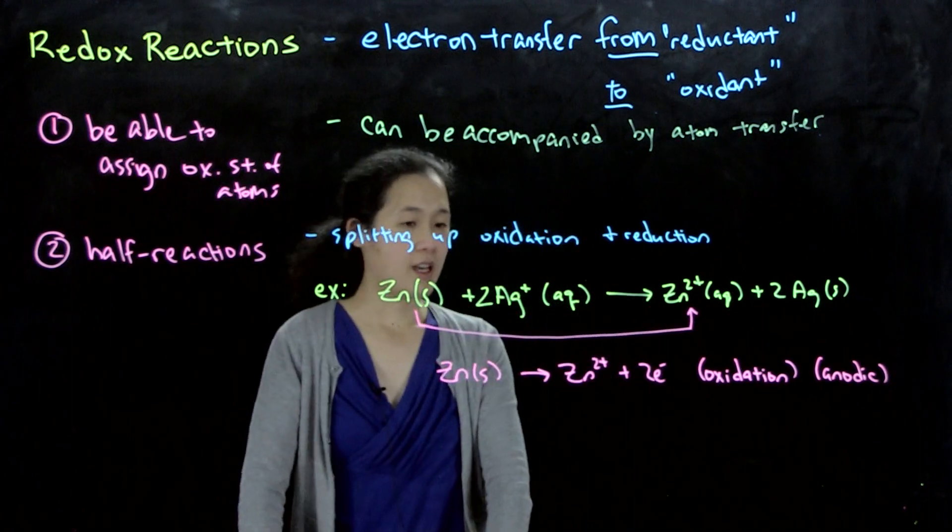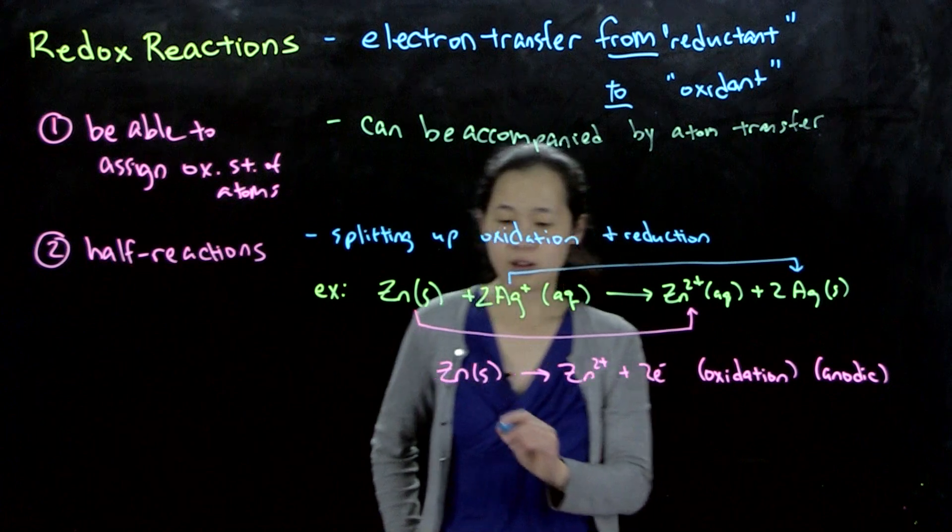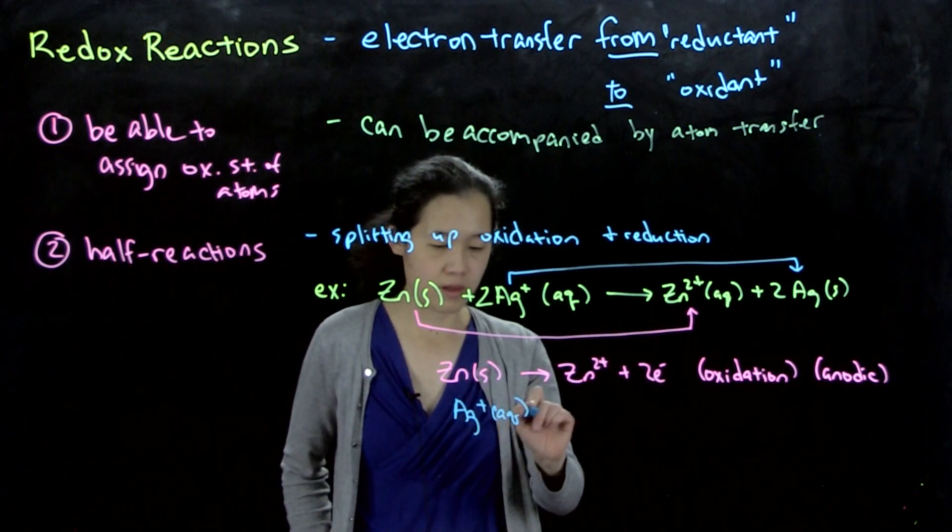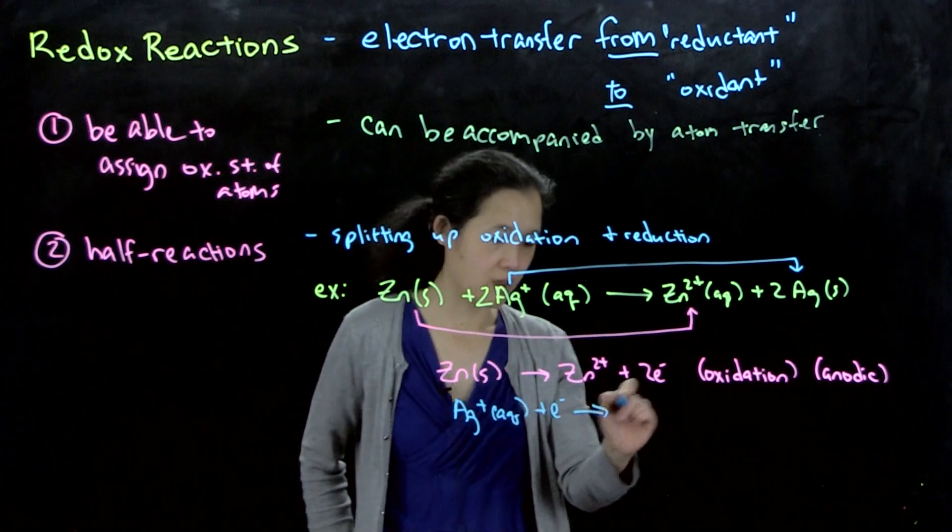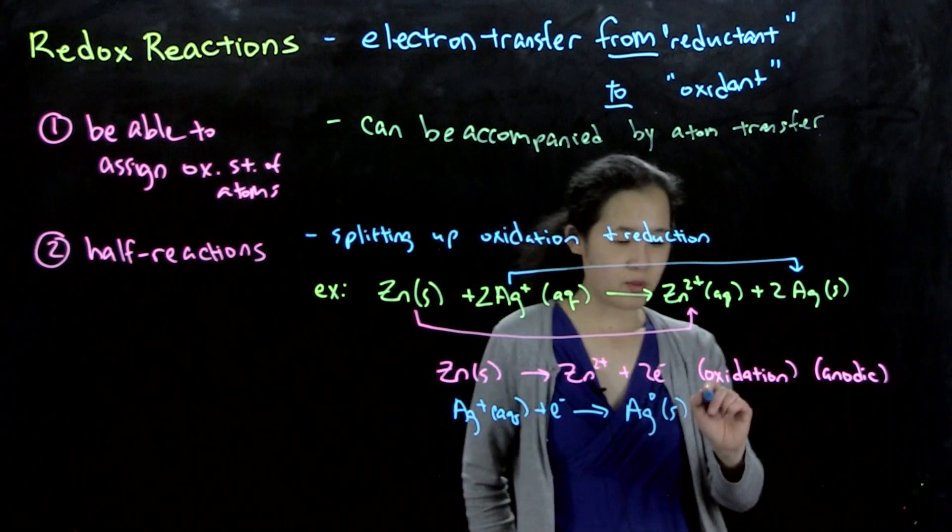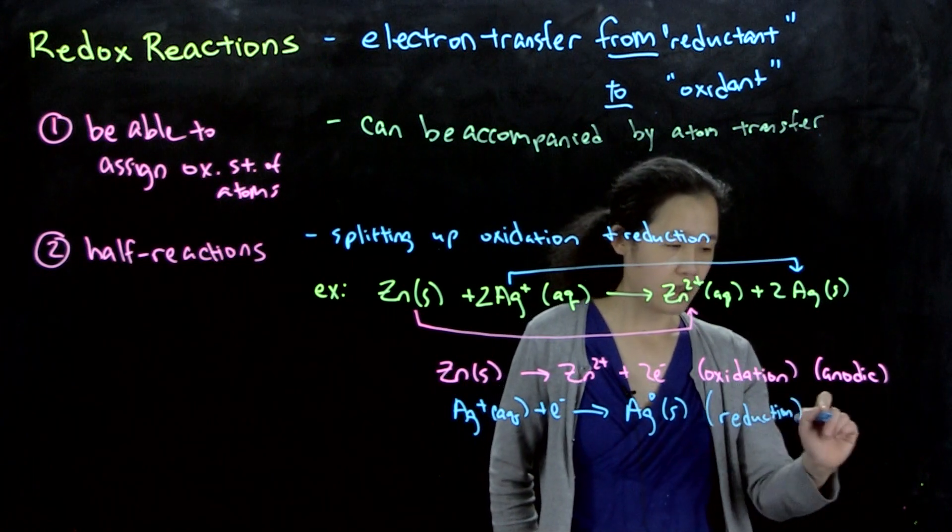And then, if we look at silver plus going to silver 0, then we have 2 Ag+ plus 2 electrons going to 2 Ag 0. So this would be reduction, cathodic.